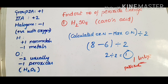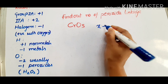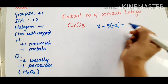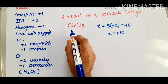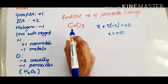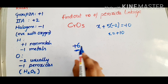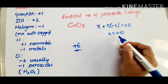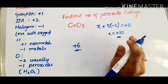Let's see another example: find out the number of peroxide linkages in CrO5. We calculate the oxidation number of the central atom chromium. Generalizing: x plus 5 times minus 2 equals 0, giving x equals plus 10. Chromium belongs to group 6B, so the maximum oxidation state of chromium is plus 6.